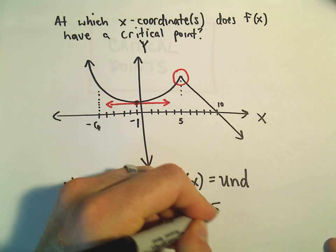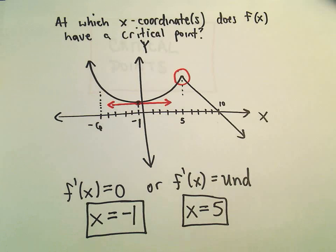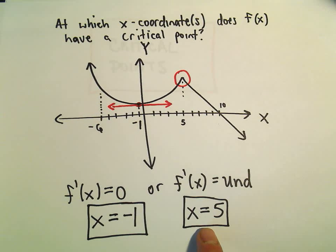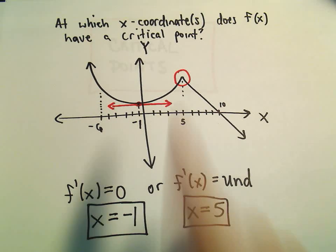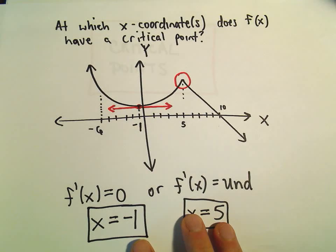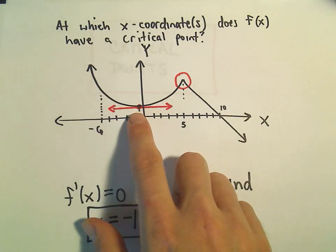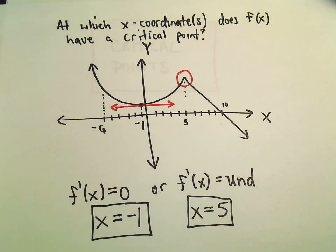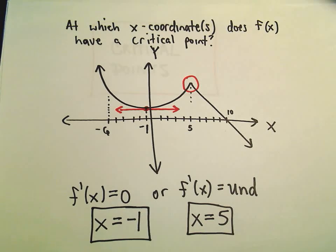So we would say at x equals five, the derivative is undefined. And those two points, we would say at x equals negative one and at x equals five, those would be the x-coordinates that correspond to points where a function does have a critical point.